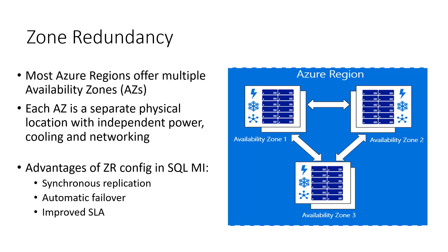Most Azure regions offer multiple availability zones. An availability zone is essentially a separate physical location within a region with independent power, cooling, and networking. That allows providers of services in Azure to spread their services across availability zones so that no failure in a single location can actually bring your service down.